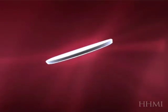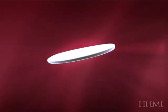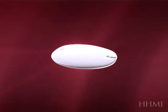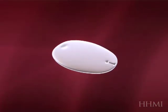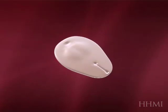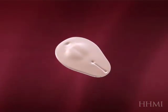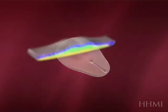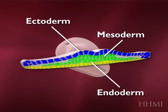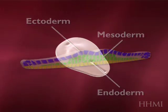You'll see that represented here as this disc gets transformed into an embryo. Those lines represent sites where cells are migrating in and out. Here's an important stage when the three beginning layers of the embryo, the so-called germ layers, are formed.